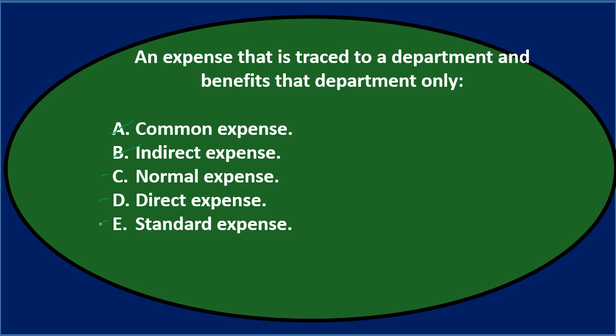Going through again: the choices are C, normal expense; D, direct expense; and E, standard expense. The term we use is the direct expense. Normal expense isn't a term we typically see. Standard expense — we might hear standard costs in budgeting contexts, so that sounds somewhat familiar. But what should sound most familiar is direct versus indirect expenses. Final answer: an expense traced to a department and benefits that department only is D, direct expense.